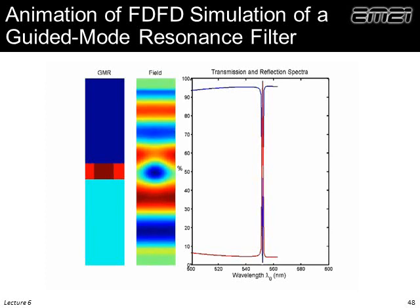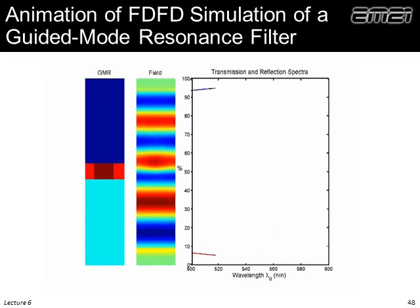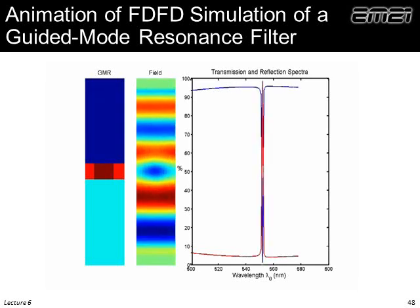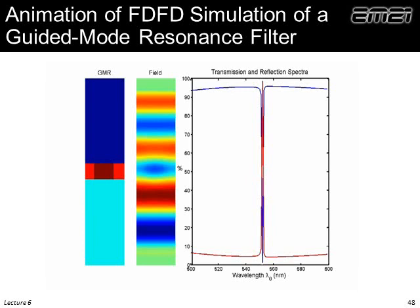Here's an animation of a guided mode resonance filter. We have air, then the diffraction grating and waveguide — that's the guided mode resonance filter — then some material below higher index than air. You're looking at the field: a plane wave passing through at a wavelength of about 500 nanometers. We simulate this and look at the transmission and reflection spectra — red line is reflection, blue line is transmission. The resonance condition is met at around 550 nanometers. As you approach the resonant condition you'll see a very strong guided mode appear within the filter, then once off resonance that disappears again and it looks just like a plane wave passing through the dielectric slab. It's a very sensitive condition.